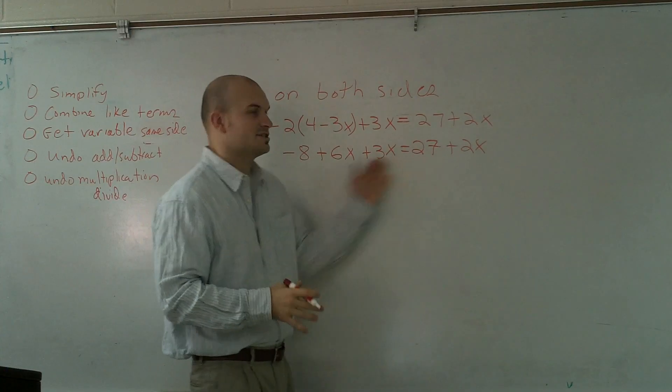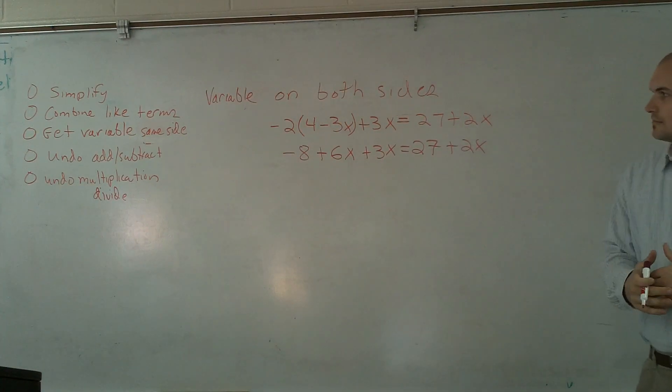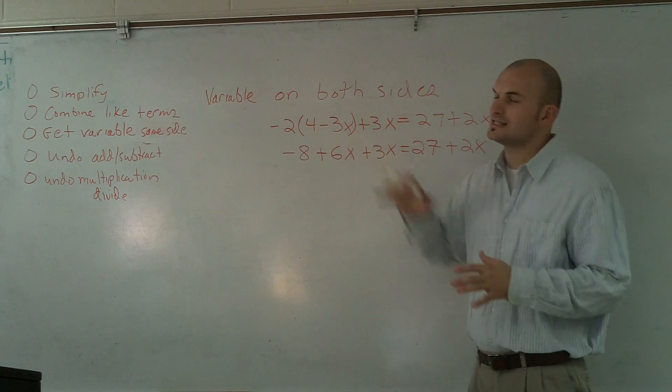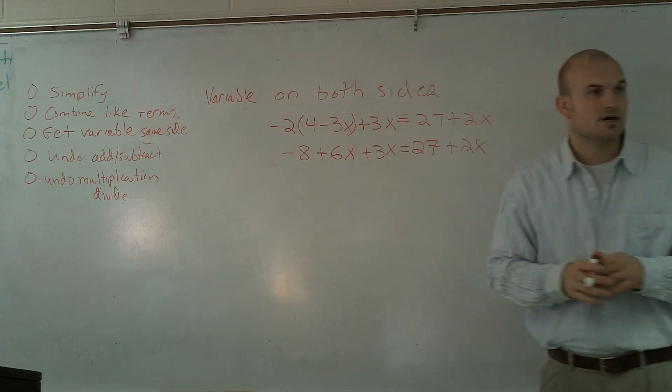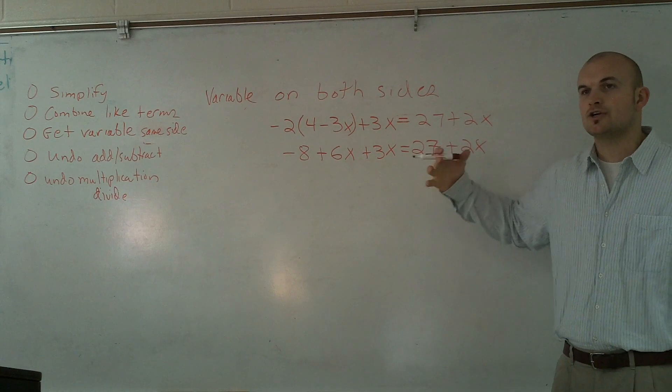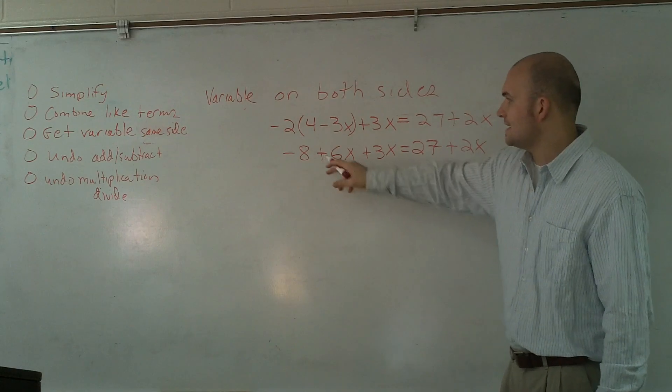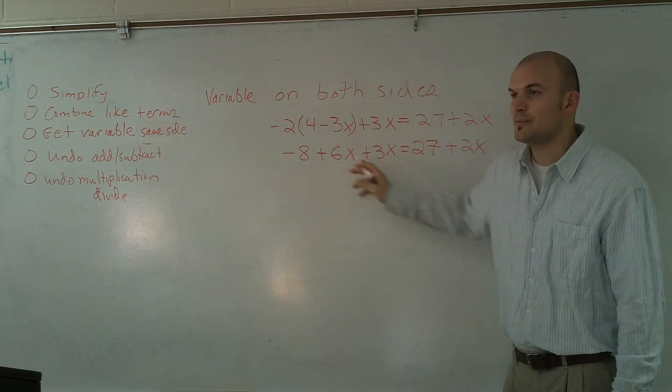Therefore, now I've simplified it to all that I'm adding and subtracting. Now the next thing I have to do is combine like terms. Remember, combine like terms is you're going to combine all your x's and combine all your numbers on the same side. I can't combine my negative 8 to anything. There's no other numbers over here.